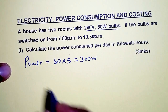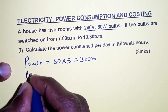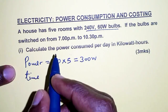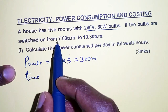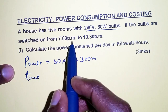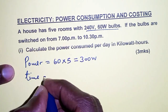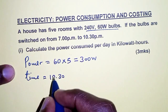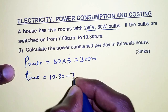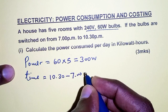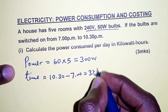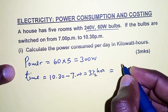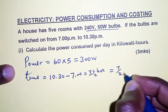We also need to determine the time the bulbs are lit in a day. The bulbs are switched on from 7 p.m. to 10:30 p.m. So 10:30 minus 7:00 gives us three and a half hours. We express this as an improper fraction: 7 over 2 hours.